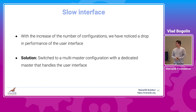Another issue was that the interface was starting to become unresponsive, especially after we increased the number of builds. Depending on the number of running builds, most interface pages were quite slow. To solve this, we switched to a multi-master configuration where a dedicated master process handles only interface requests. In this way, the response time is constant independent of the number of running builds.